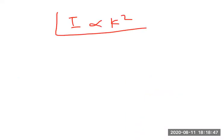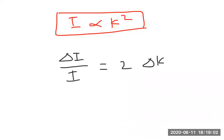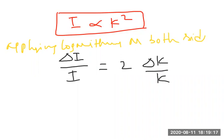So, I is proportional to k². By applying logarithms on both sides and differentiating, I can write: δI/I = 2·(δk/k). What I did: I applied log I = log k², which gives log I = 2 log k. Differentiating gives δI/I = 2·δk/k.